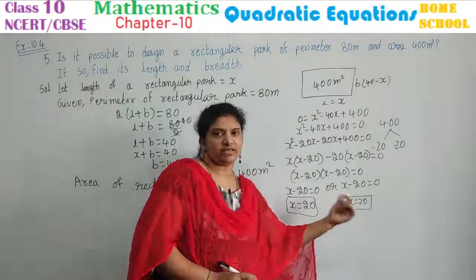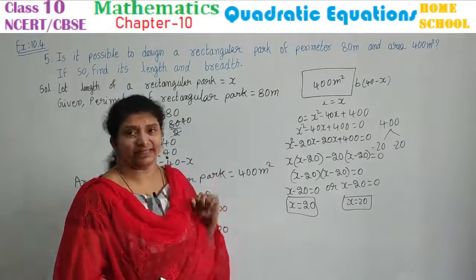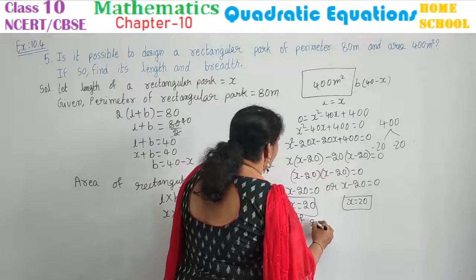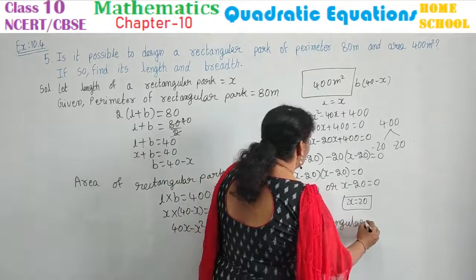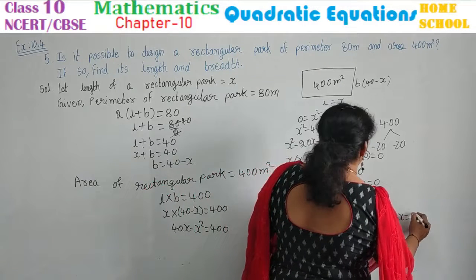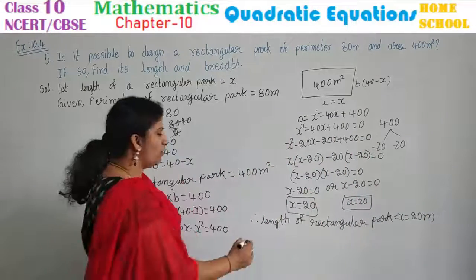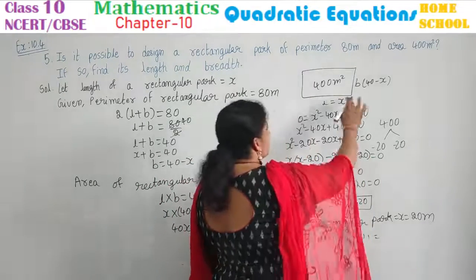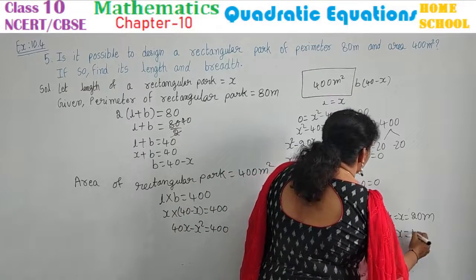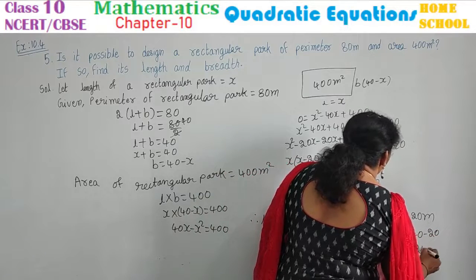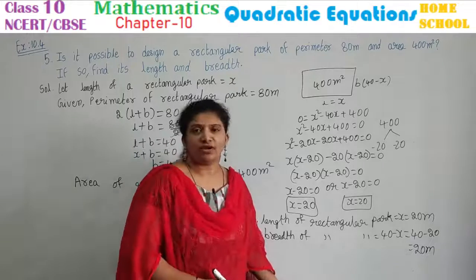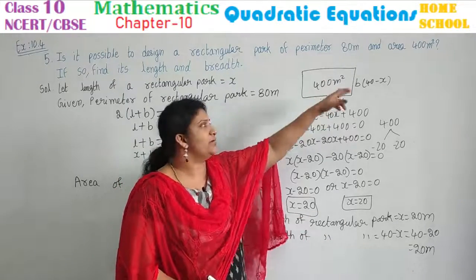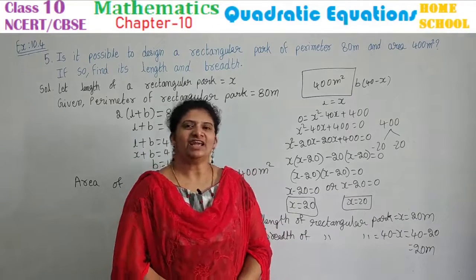x equals 20 is the length. Therefore, this problem is possible. Length of the rectangular park equals x equals 20 meters. Breadth of the rectangular park equals 40 minus x, which is 40 minus 20, equals 20 meters. So yes, it is possible, with length equal to 20 meters and breadth also equal to 20 meters.